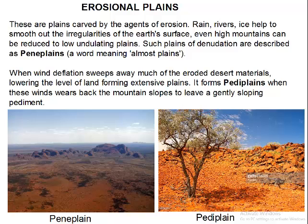We said we have two main types of erosional Plains: the Penny Plains and the Peddi Plains. The Penny Plains are formed by river movement or ice, while the Peddi Plains are lowlands formed as a result of wind movement. So whilst Penny Plains are formed by river or ice erosion, which smooths out irregularities of the Earth's surface, the Peddi Plains are formed when wind does the job.